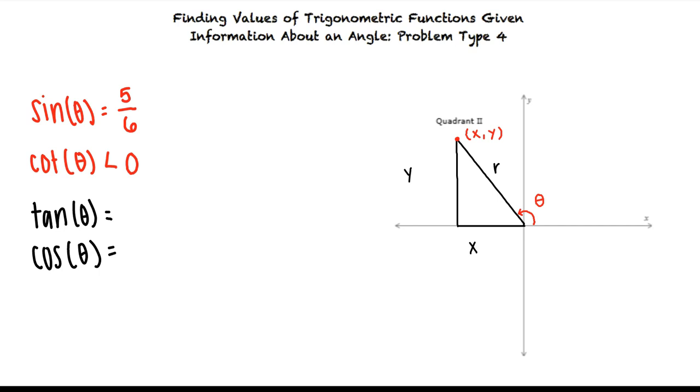Since we're given sine theta is equal to five-sixths this would mean that the side opposite of the angle equals five and the hypotenuse equals six right? That's right. So the last value we need to find is the adjacent side. We can do this using the Pythagorean theorem.